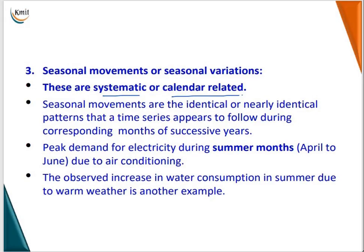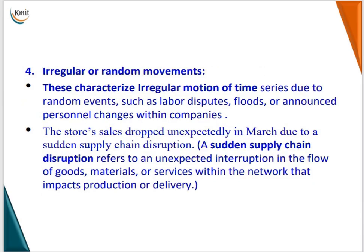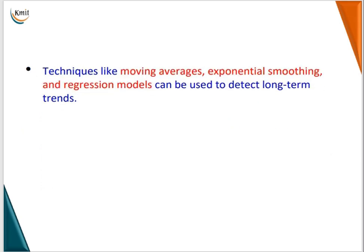Seasonal moments or seasonal variation are systematic or calendar-related patterns — identical or nearly identical patterns that a time series follows during corresponding months of successive years. For example, peak demand for electricity increases during summer, and water consumption also increases in summer. Irregular or random moments characterize irregular motion of a time series due to random events such as labor disputes. For example, store sales dropped unexpectedly in March due to a sudden supply chain disruption — this is an irregular or random moment.